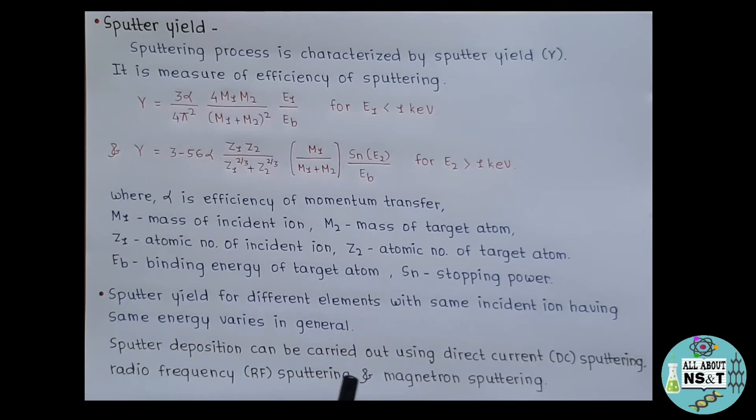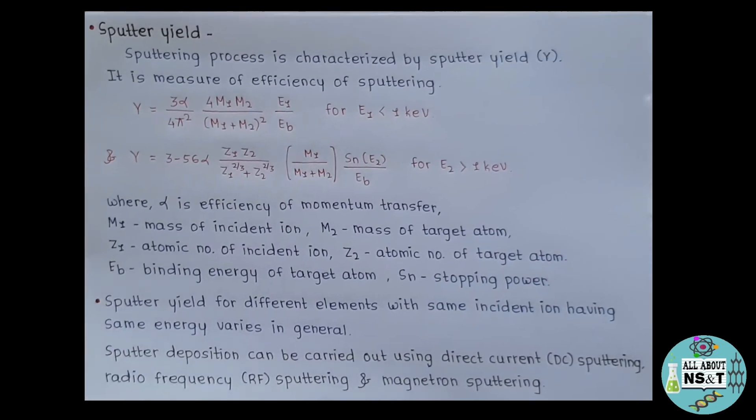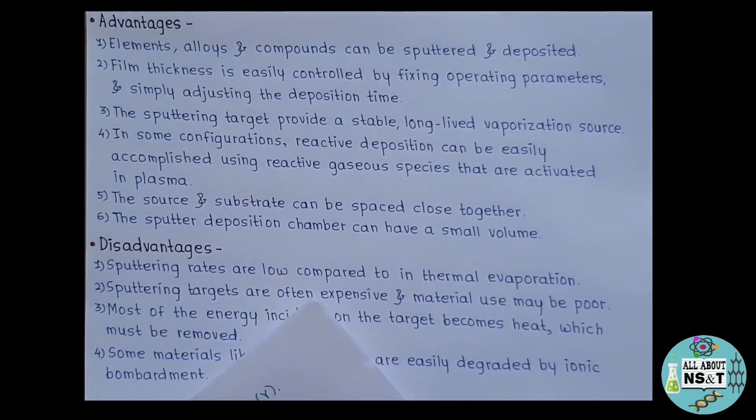Sputter deposition can be carried out using direct current, that is DC sputtering, radio frequency, that is RF sputtering, and magnetron sputtering. Now, after knowing all these concepts, it's time to put some light on its advantages and disadvantages. Firstly, let's read out its advantages.